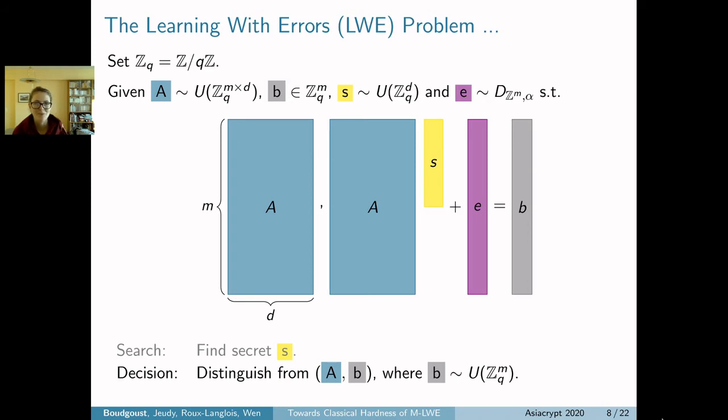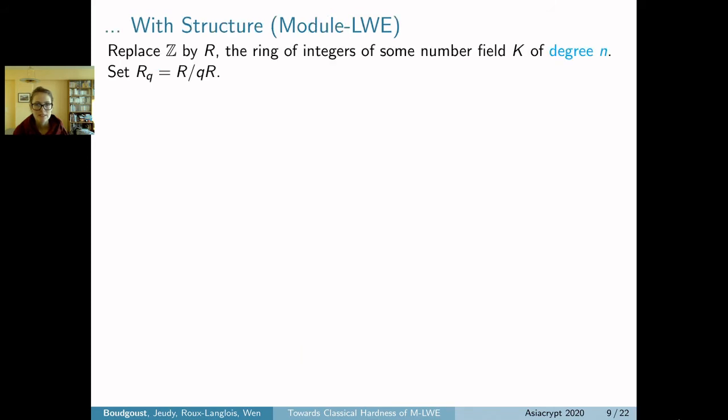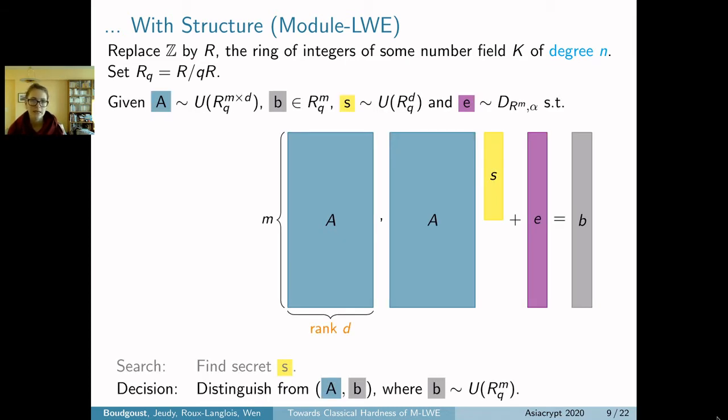There are two things I'd like to remark. This is the learning with errors problem, and as I already said, we are interested in the variant over modules. So again we go to the number-theoretic framework. We simply replace the ring of integers by the ring of integers of some number field and set the quotient ring R_q to be R modulo qR. We have the same picture where now the matrix A is sampled uniformly at random over R_q with m rows and d columns, the rank.